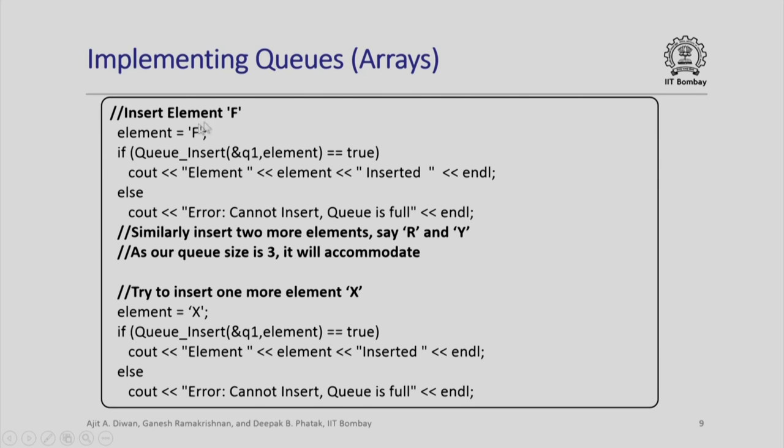Next we insert one element F. Notice how it is inserted: I have put F to element, call this queue_insert and print a message saying that it has been inserted properly. In exactly similar fashion I can insert two more elements say R and Y. After having inserted F, R and Y, because I have assumed the maximum size of my array to be 3, there is strictly no place anymore for any new element in the queue.